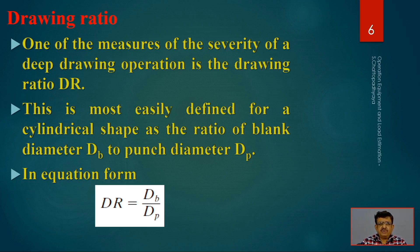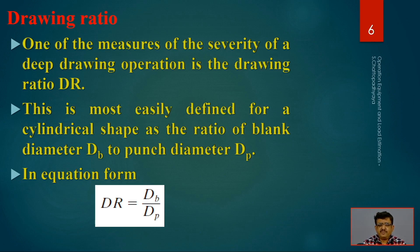The drawing ratio is one of the measures to determine the severity of deep drawing. It is a severe deformation, and the ultimate severity has to be determined. One measure of the severity of a deep drawing operation is the Drawing Ratio (DR), most easily defined for a typical cylindrical shape. DR = DB / DP, where DB is the blank diameter and DP is the punch diameter.